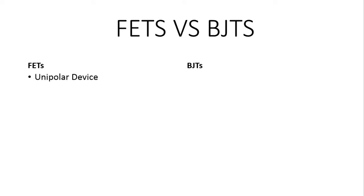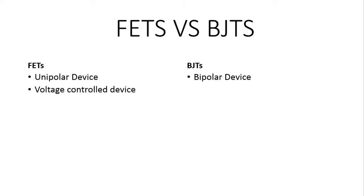The BJT is a bipolar junction transistor, so it was a bipolar device where both holes and electrons — that is, both majority and minority carriers — were responsible for conduction. The FET is a voltage control device.